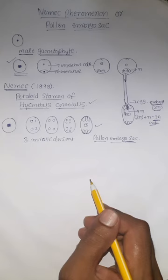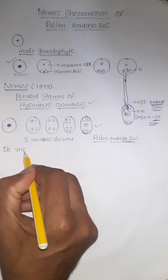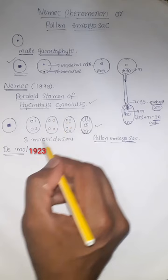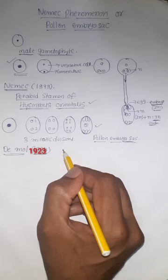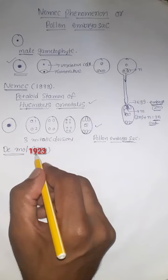Now, one more scientist called Dmol. He observed the same phenomenon in the same plant in the year of 1924. He just re-examined the same thing that is pollen embryo sac in the same plant, in the year of 1924.